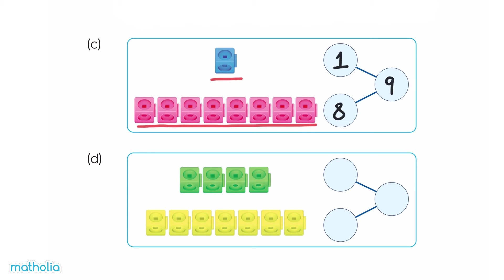Part D. Look at the cubes. There are four green cubes and seven yellow cubes. Four and seven make eleven.